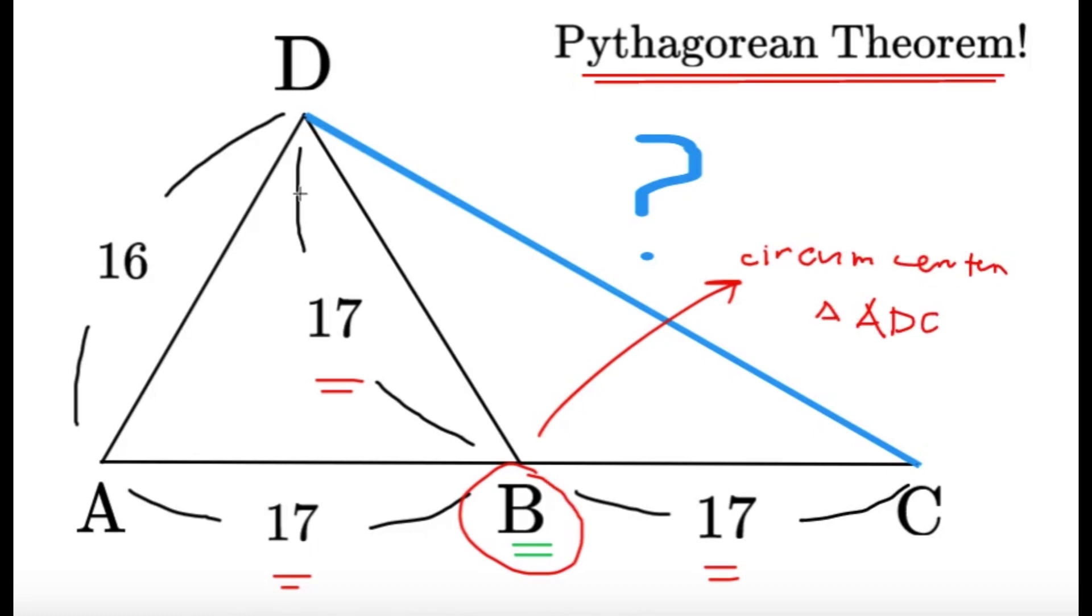So this is the case where triangle ADC here must be right, since, if you can recall, the midpoint of the hypotenuse of a right triangle is, in fact, the circumcenter. And that is the reason why we can use the Pythagorean theorem.